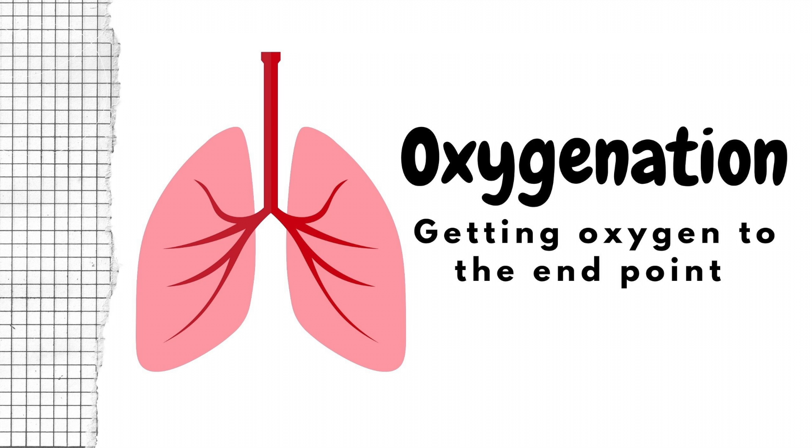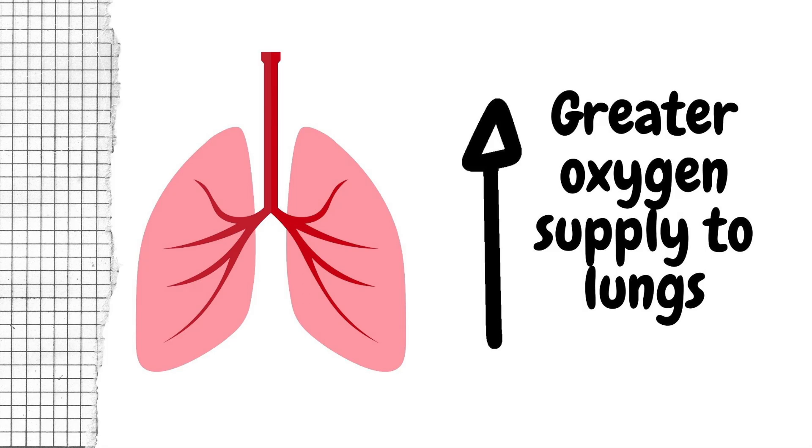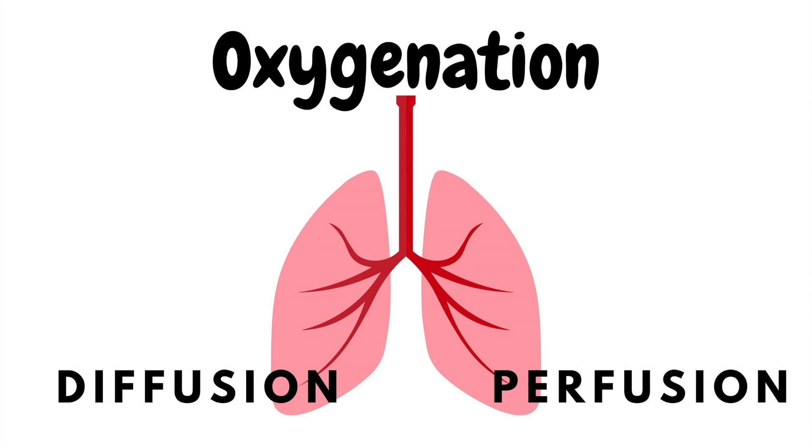Let's move on to oxygenation. What is oxygenation? Very simply put, oxygenation is the means of getting oxygen to a certain endpoint. It is the process of providing a greater oxygen supply to the patient's lungs and therefore to their circulation. This is accomplished through two different processes: diffusion and perfusion.